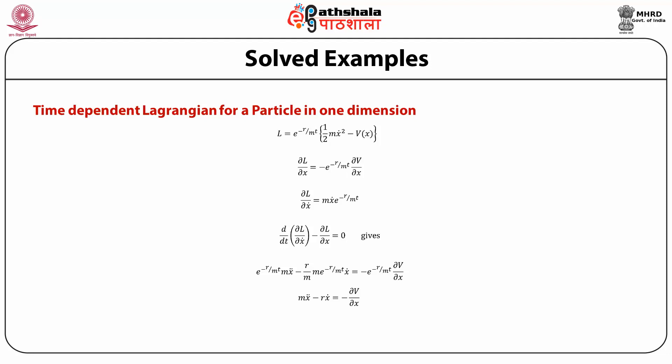Now the Lagrangian equation of motion is d/dt(∂L/∂x-dot) = ∂L/∂x. Since ∂L/∂x-dot depends on time explicitly, the time derivative gives exp(−gamma/m · t)[m x-double-dot − (gamma/m) x-dot] = −exp(−gamma/m · t) dV/dx. Canceling the common factor exp(−gamma/m · t), the equation becomes m x-double-dot − gamma x-dot = −dV/dx, which you can recognize as the equation of a damped oscillator, where dV/dx is the driving force and the damping force is proportional to the velocity, namely −gamma x-dot.